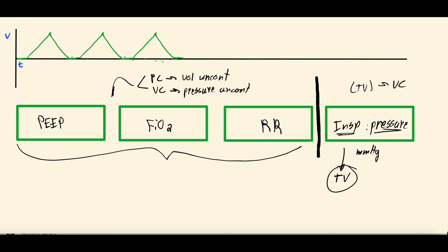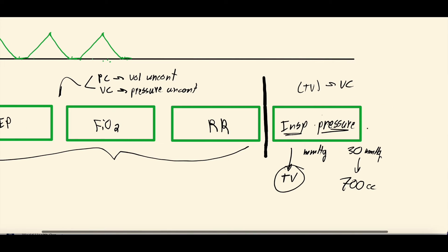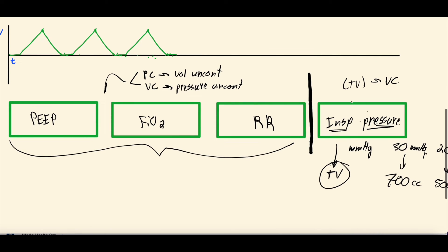For example, if you set the inspiratory pressure at 30 mmHg and it results in a tidal volume of 700 cc's per breath — that's too high. You can decrease the inspiratory pressure to 20 mmHg, and the lower pressure will result in a lower tidal volume, maybe 500 cc's per breath. Also, most of the time this inspiratory pressure is set above the PEEP — so if you set it at 15 and PEEP is 5, the total pressure with each breath is 20.